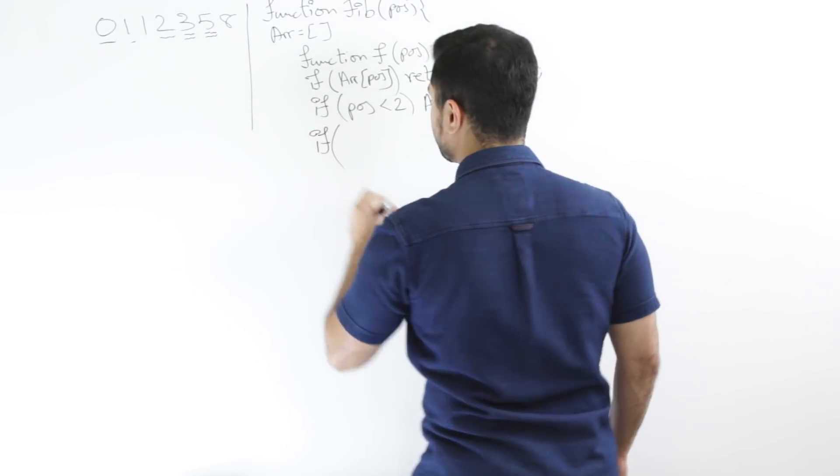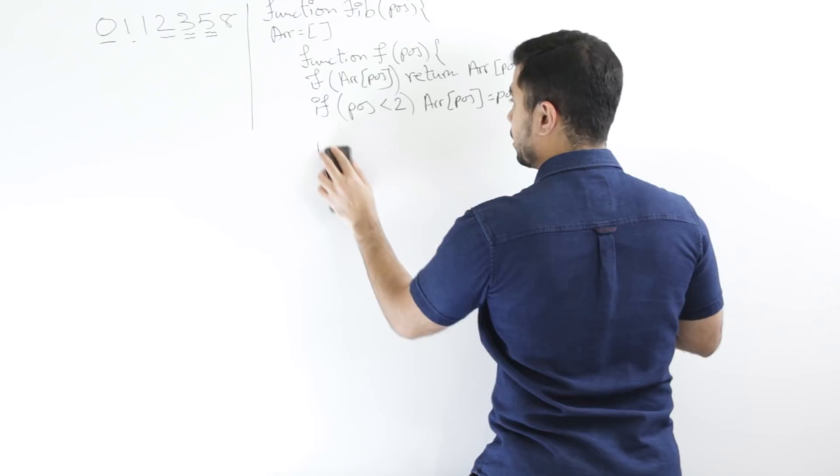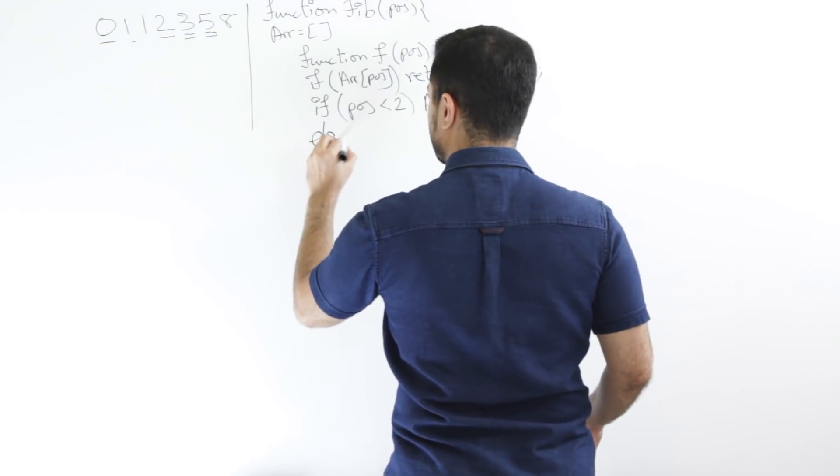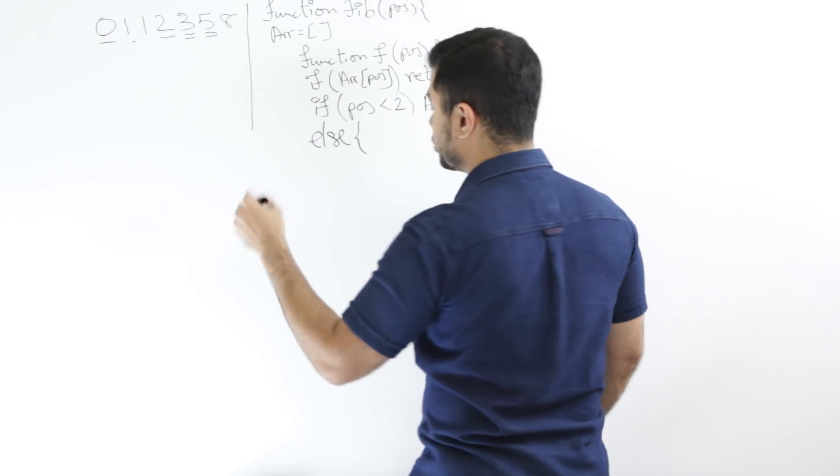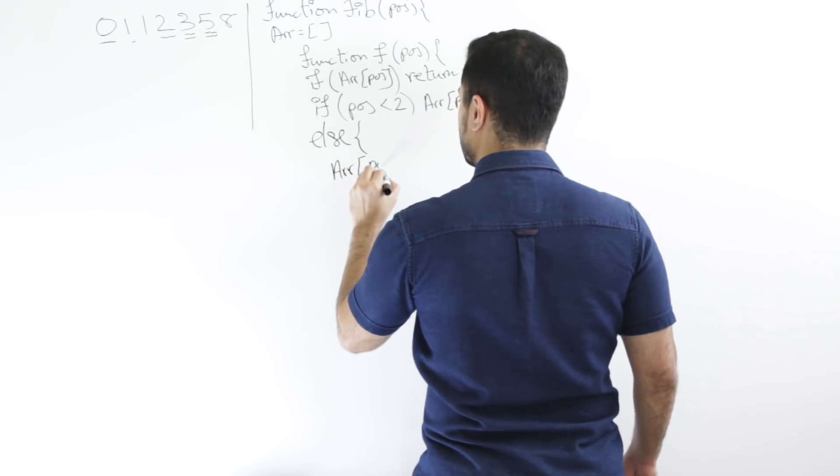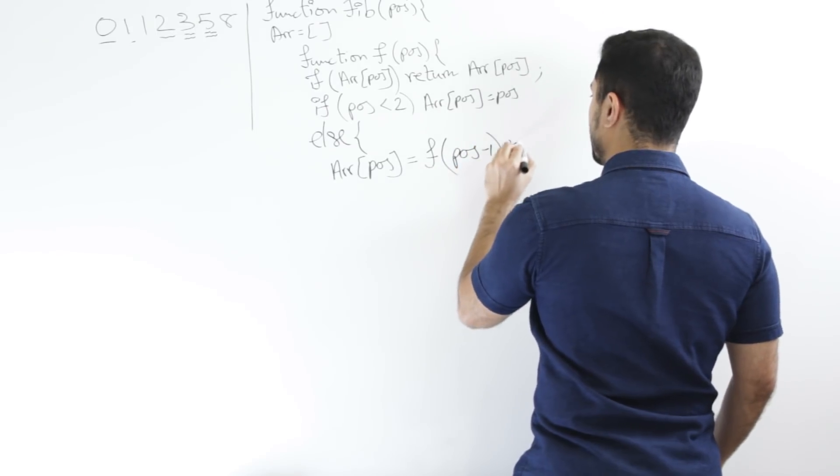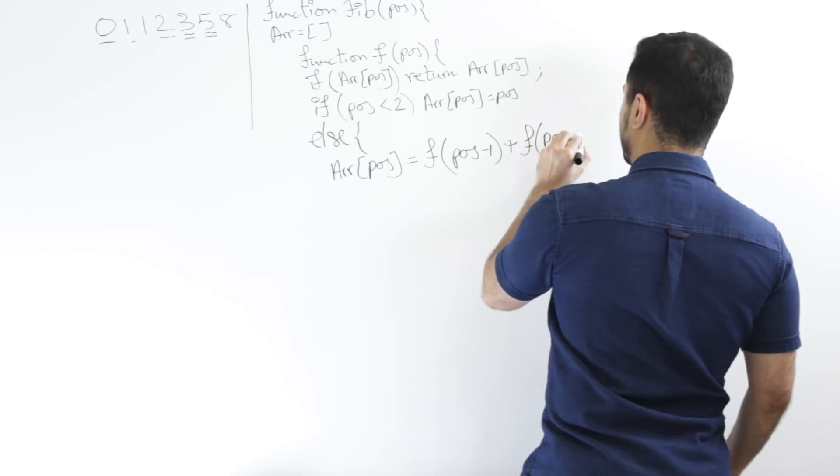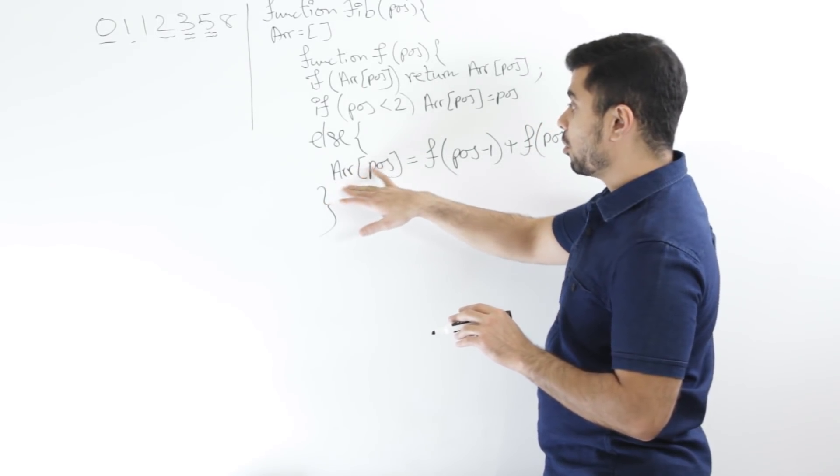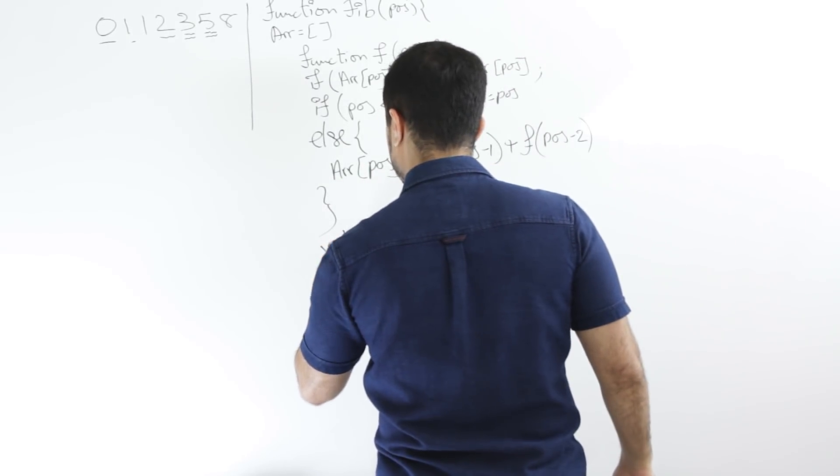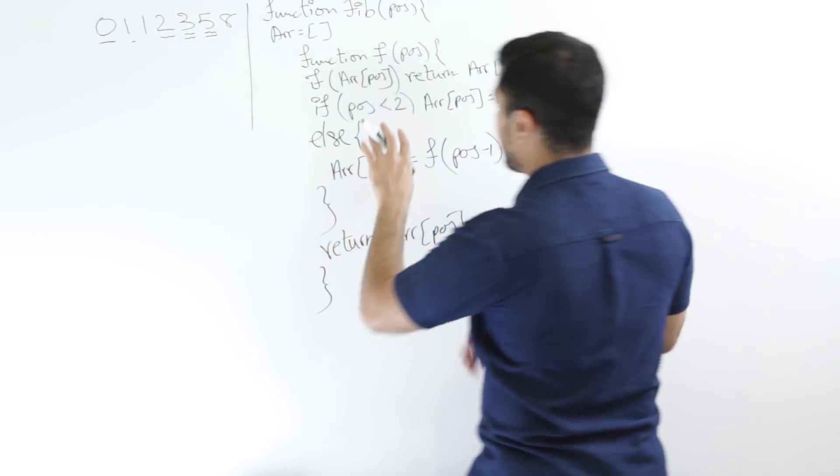Now I will say, now comes the meat of the recursion, right? I will say that if this is not the case, then I'll have an else statement saying that calculate recursively the Fibonacci sequence or Fibonacci number at that position. So I'll say array at the position equals whatever the function F is, F at that position minus one plus F at that position minus two, right? And so that's it for our recursion. After this is done, I will return whatever my number was over here, right? So I'll say return array position. Perfect. So this would be my recursive function.